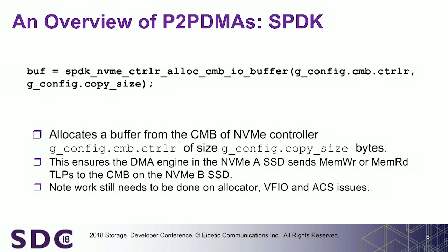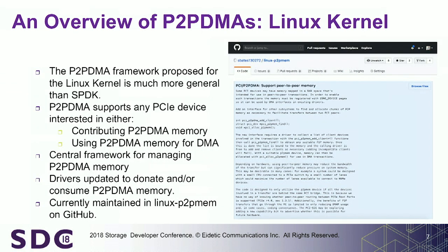That code is in SPDK. There are some issues we need to address around this framework — it's on the to-do list. We need to make improvements to the allocator, add VFIO support (right now we only have UIO support), and there are issues around controller memory buffers in virtualized environments we're sorting out inside NVMe. There's also Access Control Services — a feature of PCIe — which is a whole pile of fun. But that code is upstream; you can download it today.